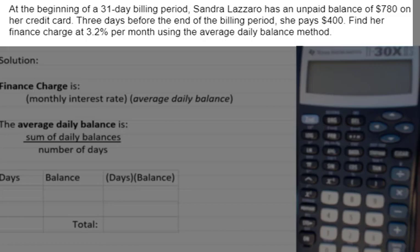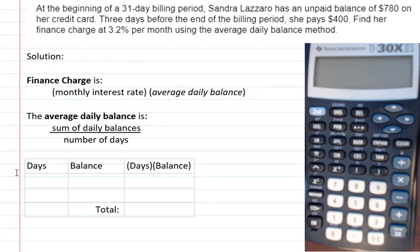Okay, so a couple of things. The billing period is normally a month, so that's either going to be 30 or 31 days. Sometimes they'll just tell us which month, like March, and we're expected to know how many days that is. But in this case, they're actually telling us it's a 31-day billing period.